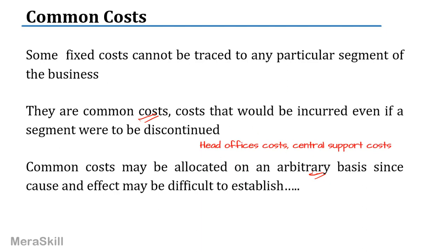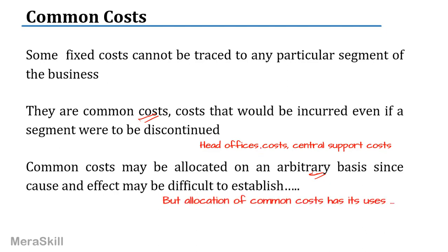Head office costs, central support costs — there is a head office and all other segments work around it. The head office caters to the overall needs of all the other branches. It is a common cost, but you need to allocate common costs.